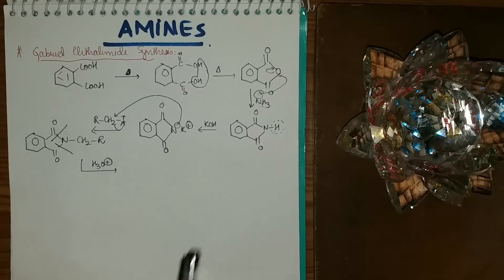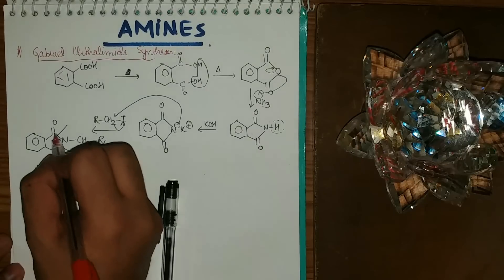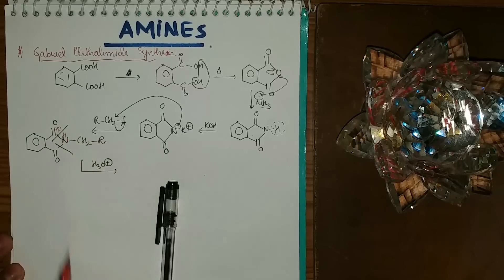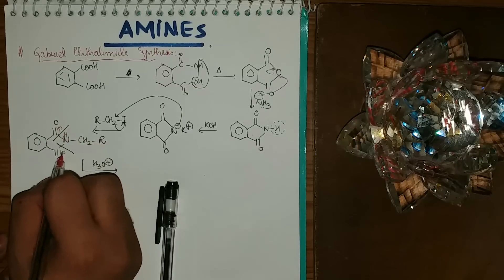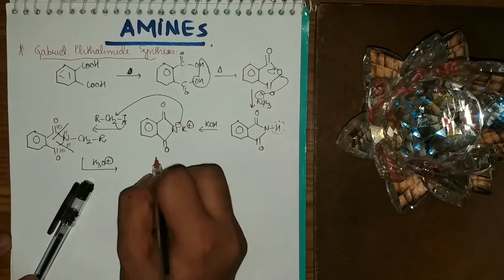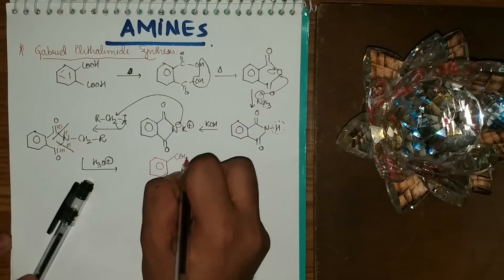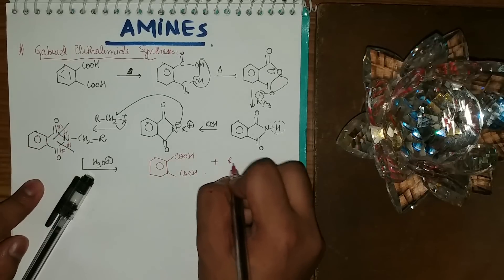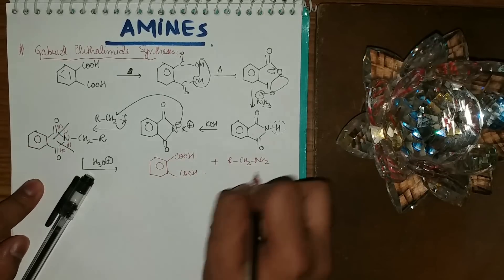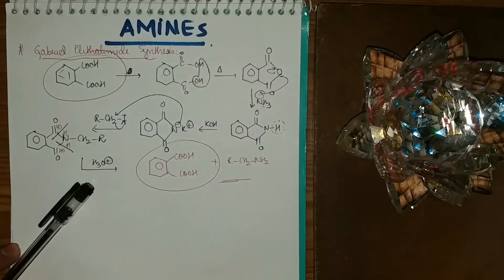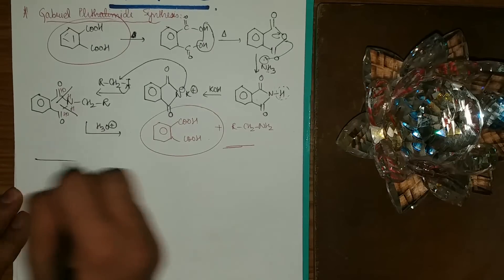I can then hydrolyze it using H3O⁺ or H2O. The C-N bonds are broken: OH goes here and H goes with it on both sides. I'm getting the original phthalic acid back, plus R-CH2-NH2. The phthalimide acts as a catalyst here.